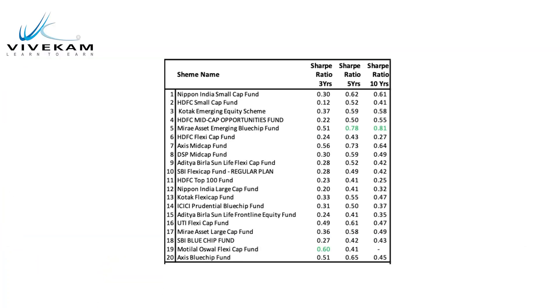Now let us see how a very popular mutual fund scheme's Sharpe ratios have been over 3, 5, and 10-year timeframes. From the 3-year column, you will understand that not even one of the mutual fund schemes has a Sharpe ratio of more than 1, which implies none of these schemes were guaranteed to generate a return higher than their own benchmark. When you look at 5 years, still not even one mutual fund has made 1. And even for the 10-year period, not even one mutual fund has generated a Sharpe ratio of more than 1, which implies the top 20 mutual funds in this country are not likely to generate a return higher than their own benchmarks.